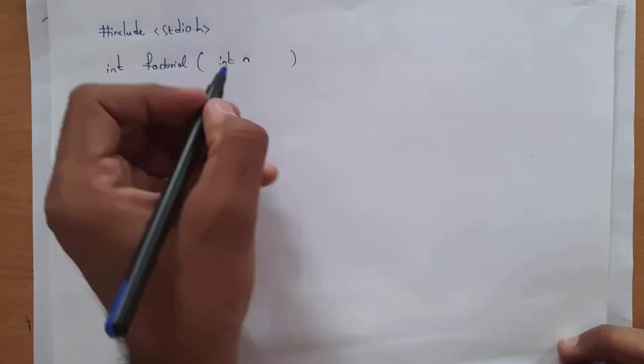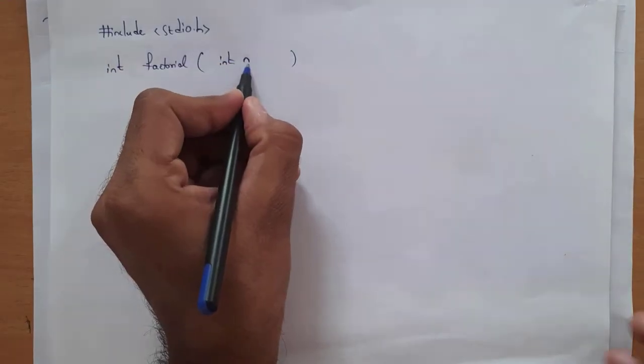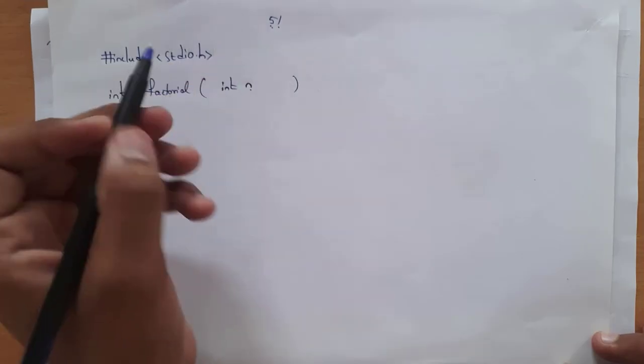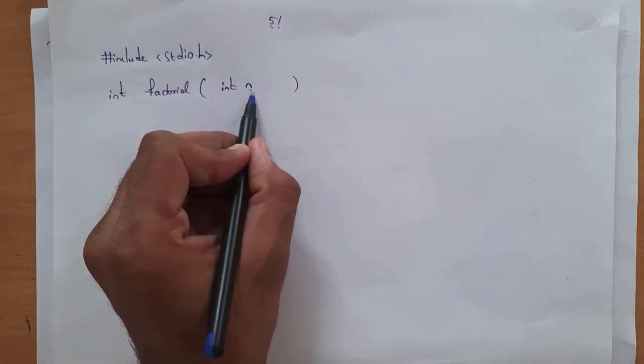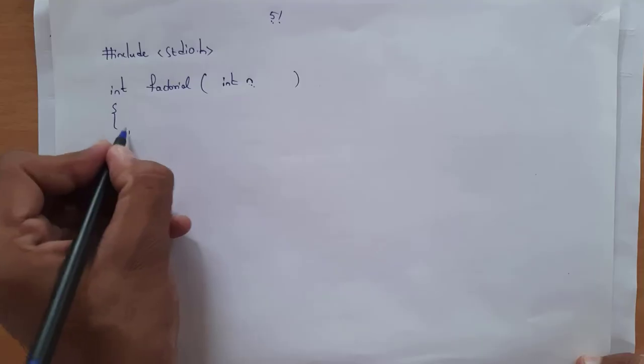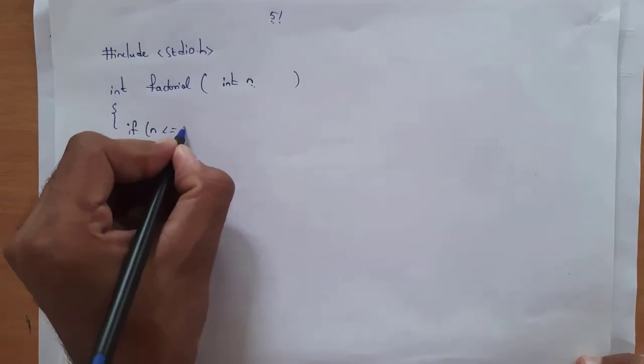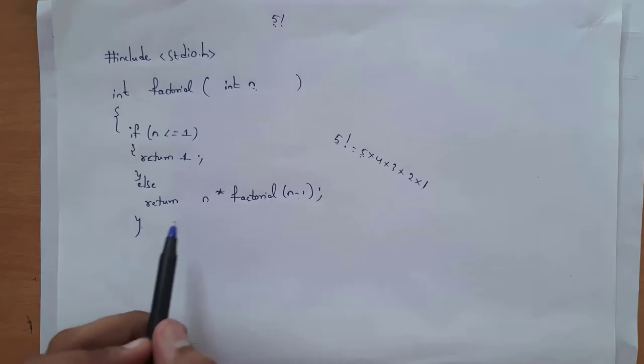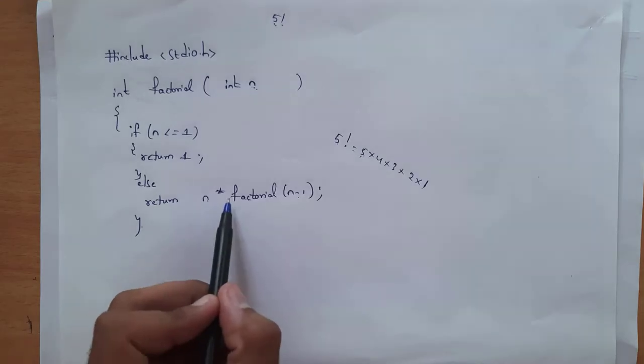Now I will explain the program to find factorial of a number using recursion. First I written hash include stdio.h. After that I return int and give the function name as 'factorial', inside which I written int n — n is the number whose factorial you want to find. For example, if I want to find factorial of 5, this 5 is an integer stored in n. Inside this you need to write the condition: if n is less than or equal to 1, return 1.